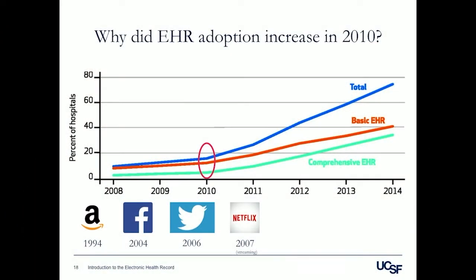What really spurred the increase in adoption rate around 2010? One point worth making is that healthcare is relatively late to electronic health record adoption and to technology in general. Thinking about Amazon, Facebook, Twitter, and other technologies we use day in and day out — those actually started a lot earlier than electronic health records really began to be adopted.